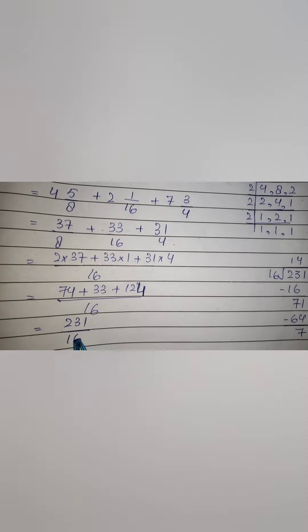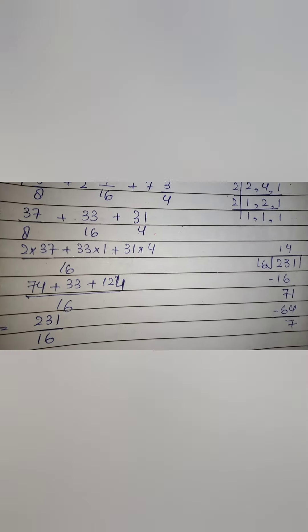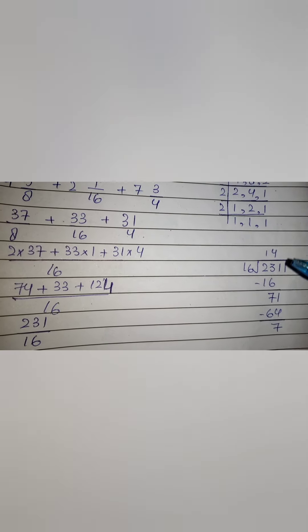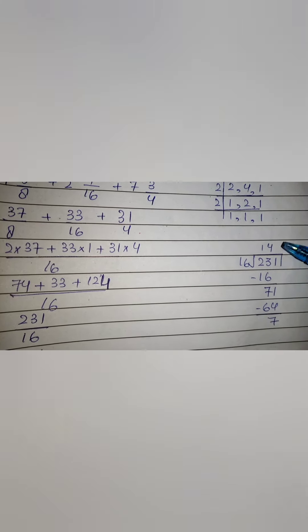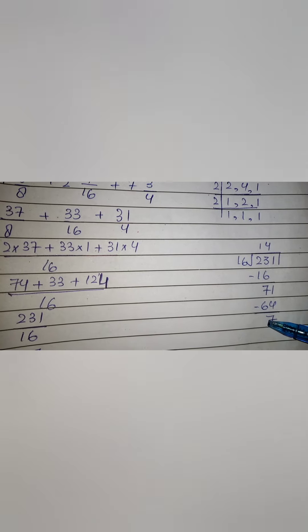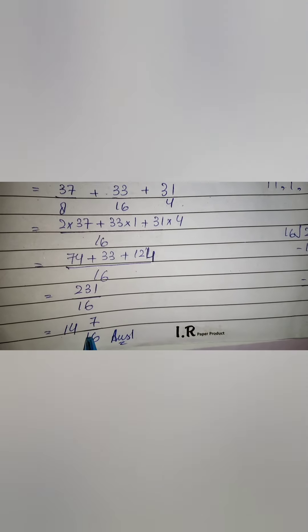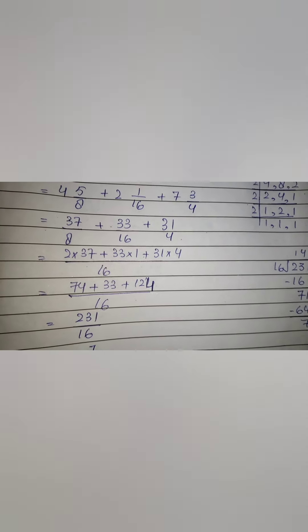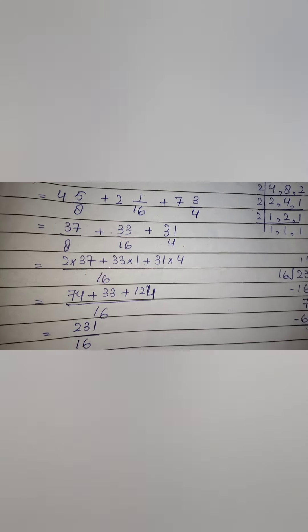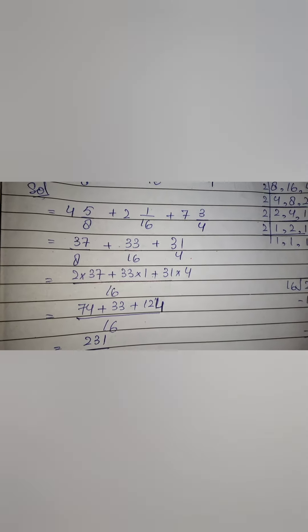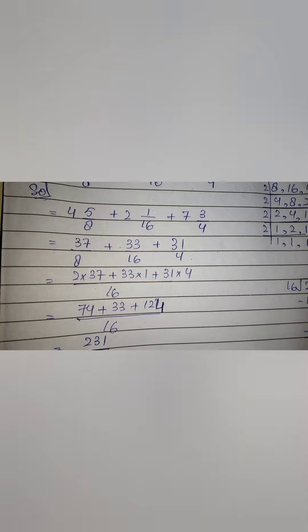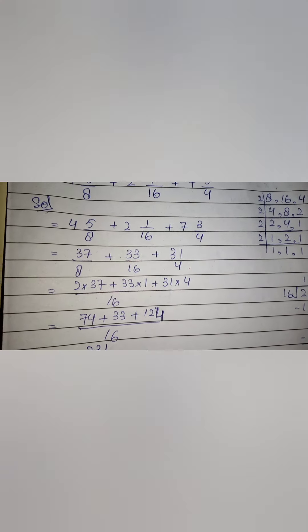Ab hum in teeno ka lenge LCM — eight, sixteen, aur four ka LCM liya to hamare paas aaya 16. Ab eight ko kitne times padha ke 16 aaya — eight × 2 = 16, to thirty-seven ko two se multiply karwaenge. Phir plus: sixteen × 1 = 16, to thirty-three ko one se multiply karwaenge. Phir four × 4 = 16, to thirty-one ko four se multiply karwaenge. Thirty-seven × 2 = 74, plus thirty-three × 1 = 33, plus thirty-one × 4 = 124. Upon sixteen.